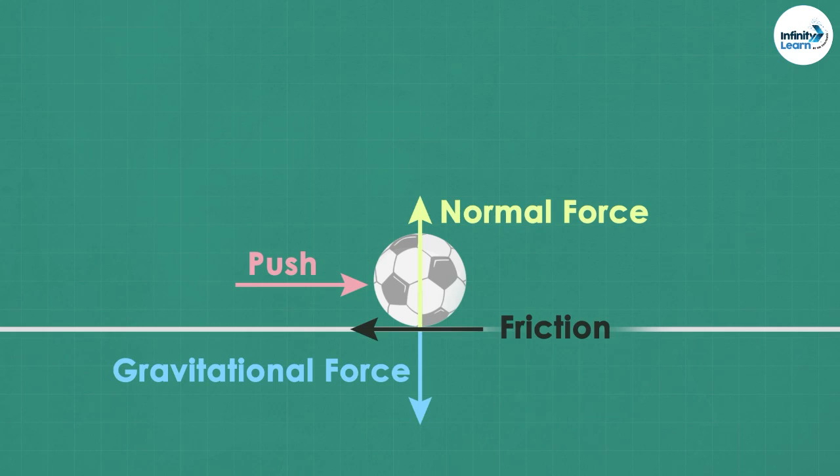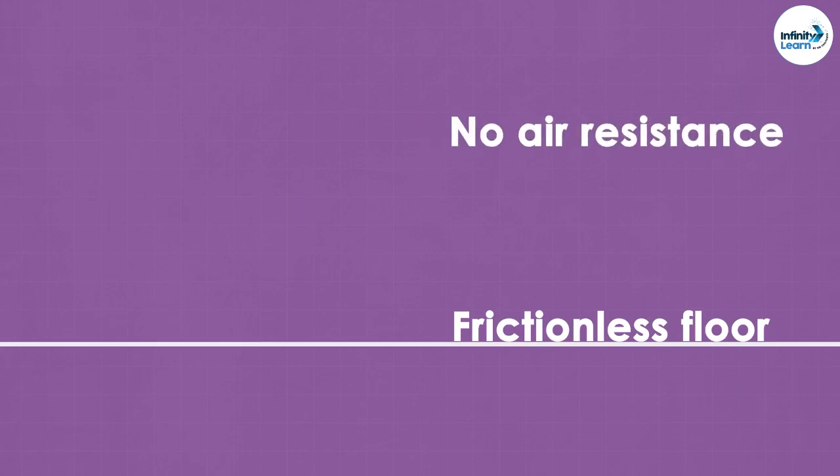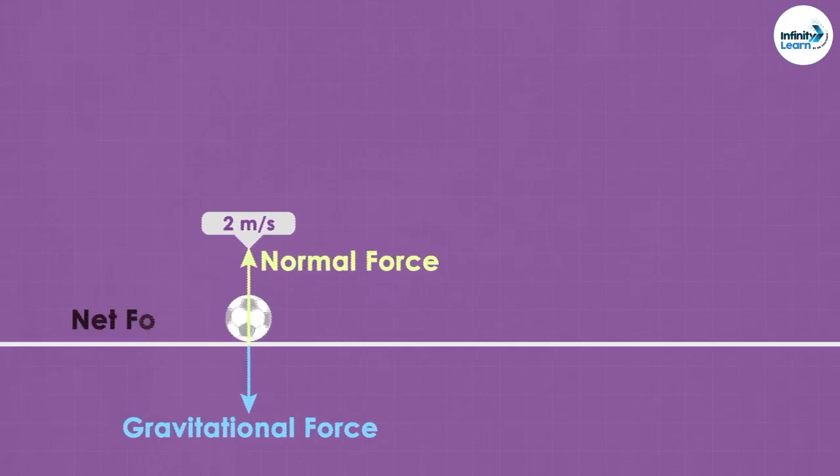Let's make it even more interesting. Assume your screen to be a frame of reference in this example. Also assume that this straight horizontal line is a frictionless floor and there is no air resistance. The ball appears from the left of your screen, moving towards the right at a uniform velocity of 2 meters per second. The only two forces acting on the ball are the gravitational and normal forces, which net each other out.